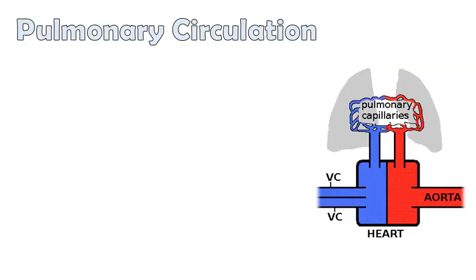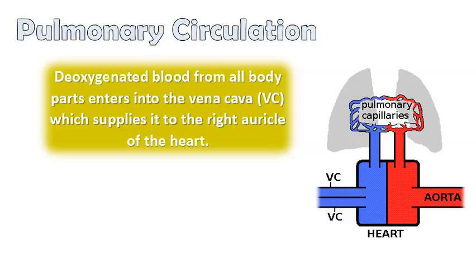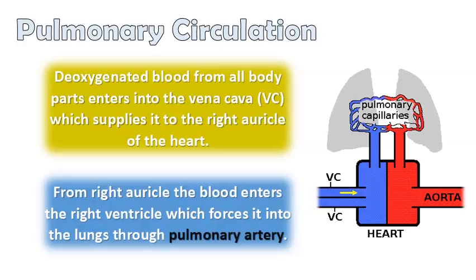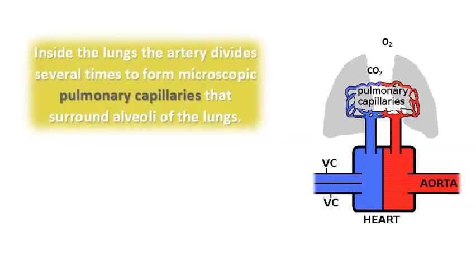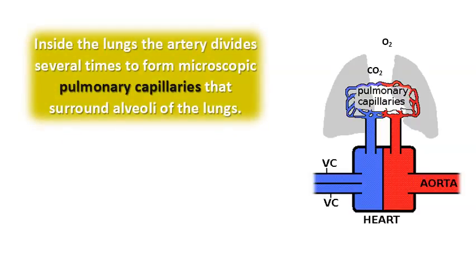This part of our circulatory system involves blood circulation between the heart and the lungs. Deoxygenated blood from all body parts enters the vena cava, which supplies it to the right atricle of the heart. From the right atricle, the blood enters the right ventricle, which forces it into the lungs through the pulmonary artery.